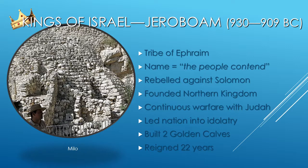1 Kings 11:28 says, 'all the forced labor of the house of Joseph.' Ephraim and Manasseh were half-tribes because they were sons of Joseph. Verses 26 and 27 say he rebelled against King Solomon because, quote, 'Solomon built the Milo and closed up the breach of the city of David his father.'